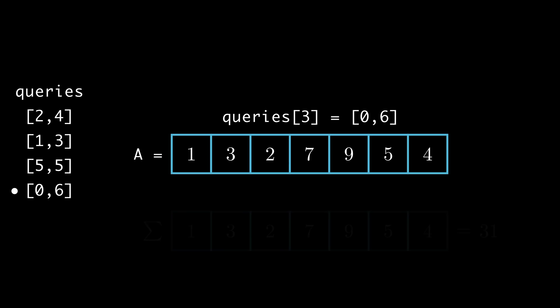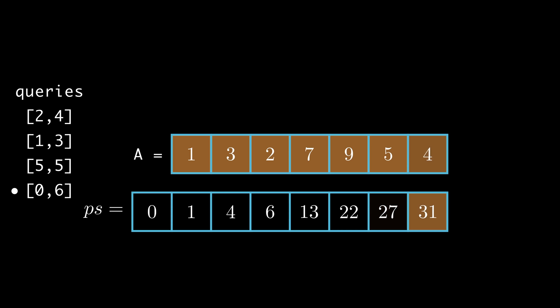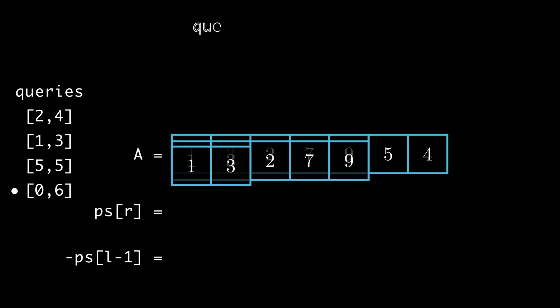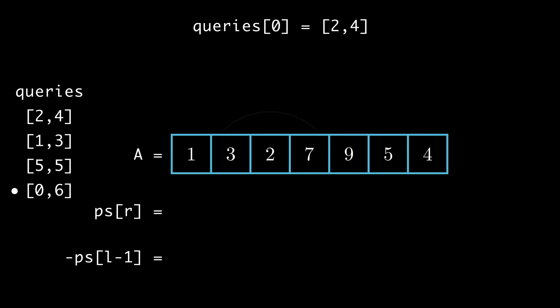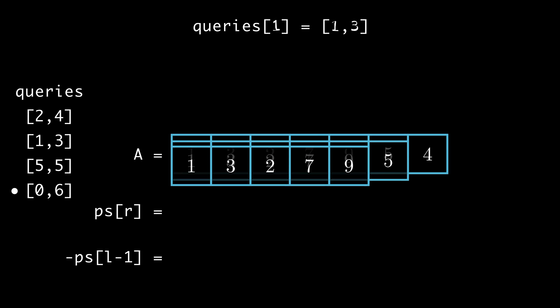In other words, PS of i represents the sum of the first i numbers. Then, to query the sum of a particular range, we can just take the running sum or the prefix sum up to R, and subtract it from the prefix sum of the element right before L. The resulting difference is the new amount that was added between positions L and R.